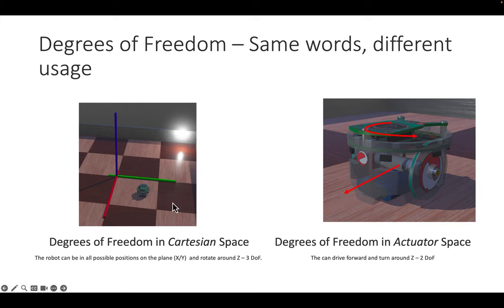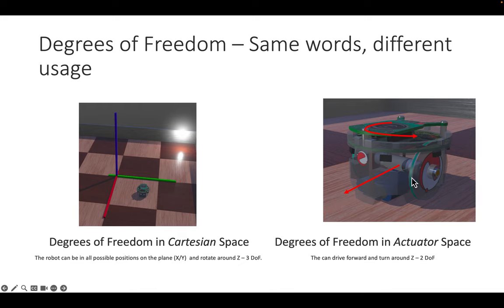For a ground robot like the e-puck or Roomba driving on the ground, there are only three Cartesian degrees of freedom: translation in x and y, and rotation around the z-axis — it cannot move up and down. However, looking at actuator space, it has only two motors. With those it can achieve forward motion and rotation around z, but it cannot move sideways — giving it two degrees of freedom in actuator space.